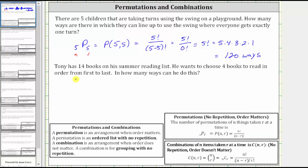For the next example, Tony has 14 books on his summer reading list. He wants to choose four books to read in order from first to last. The order matters and we assume he will not read the same book twice, so this is a permutation. The number of ways he can choose is 14 permute 4.